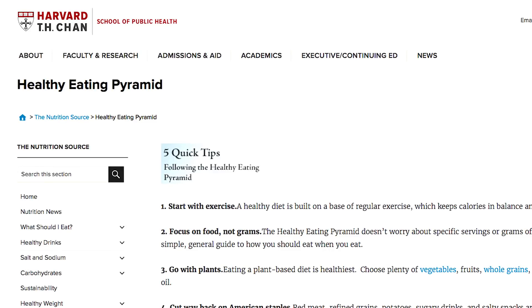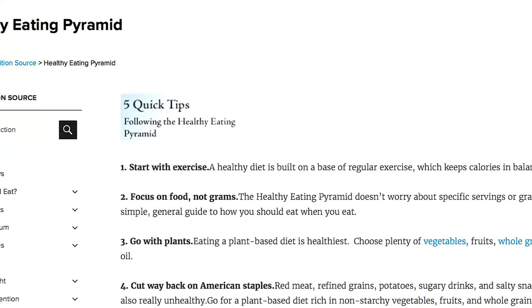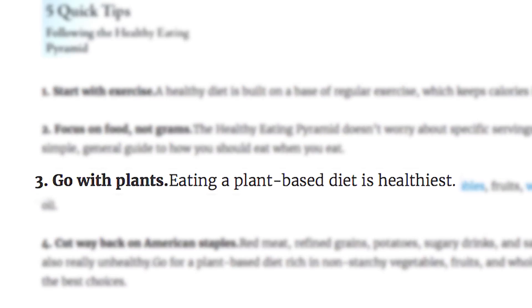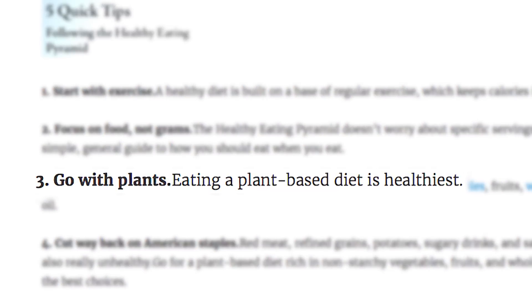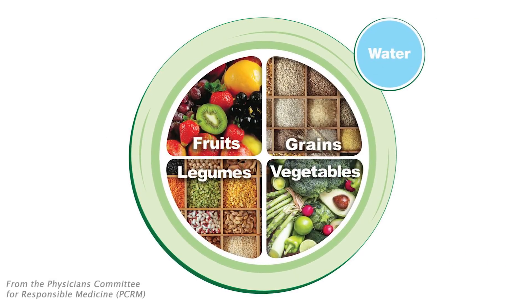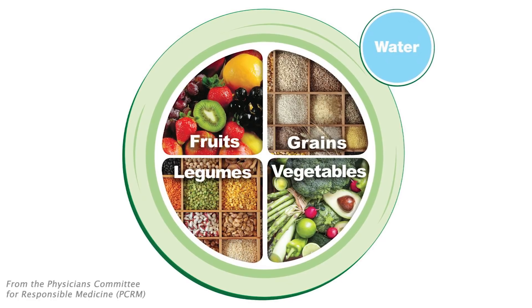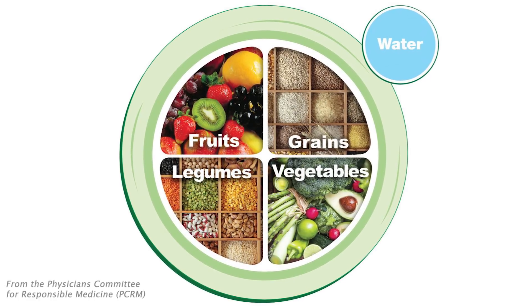The ideal or gold standard diet, from a health standpoint, remains a whole-food, plant-based diet, which means eating unprocessed or minimally processed vegetables, grains, legumes, nuts, fruits, and seeds, while excluding animal foods like fish.